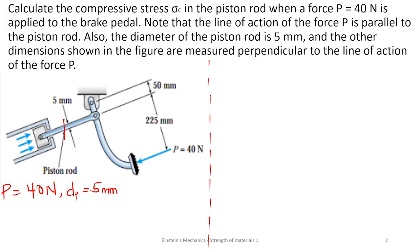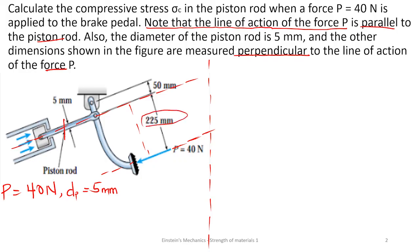We have some things we have to pay attention to. Looking at the question, it says the line of action of the force P is parallel to the piston rod. So the force inside the piston rod should also be parallel to that of force P. Another clue is that the dimensions shown in the figure are measured perpendicular to the line of action of the force P — giving us 225 millimeters and 50 millimeters — and all these dimensions are perpendicular.